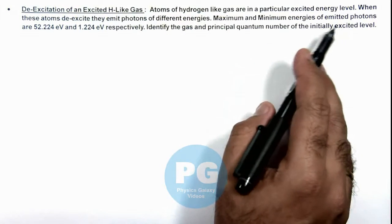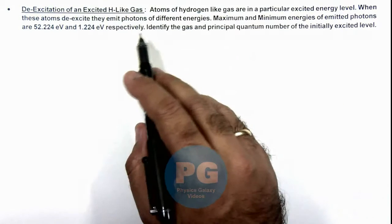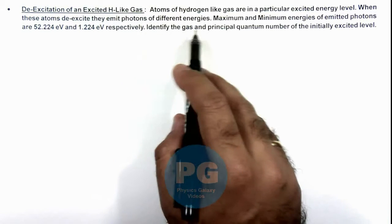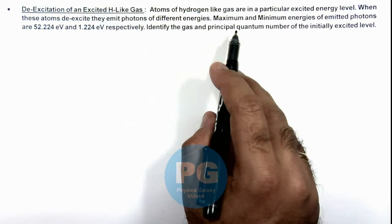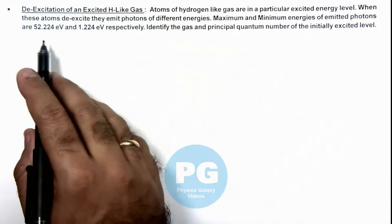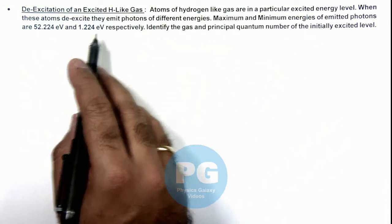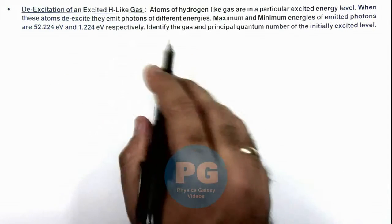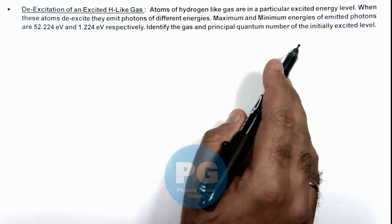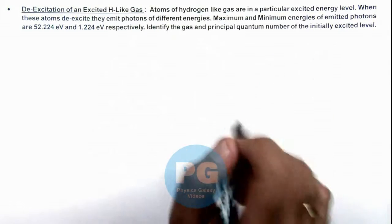When these atoms de-excite, they emit photons of different energies. Maximum and minimum energies of emitted photons are 52.224 eV and 1.224 eV respectively. We are required to identify the gas and principal quantum number of the initially excited level.